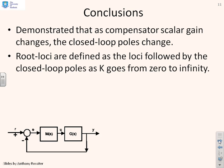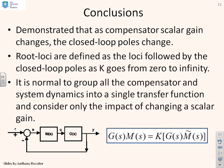Some conclusions then. We've demonstrated that as the compensator scale gain changes, the closed loop poles change. The root loci are defined as the loci followed by the closed loop poles as K goes from 0 to infinity, and you'll see they tend to follow quite clear paths. Now, it's normal to group all the compensator and system dynamics into a single transfer function, a bit like this here, G times M tilde, and separate out a single scalar gain when you are doing root loci.